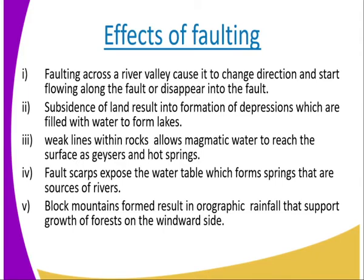Faulting across a river may cause it to change direction and start flowing along the fault, or disappear into the fault. This is where a fault is found along or across the river, and the river may get into that fault, hence going underground to reappear somewhere else. It becomes an underground river until it gets another fault that exposes it as a spring.